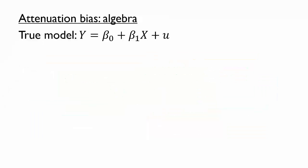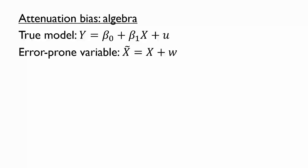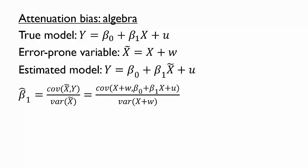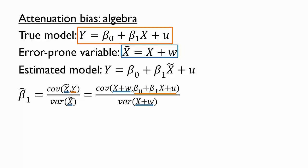Let's put some algebra behind the patterns we're seeing. Let's start with the model we'd like to estimate, and also the definition of the error-prone independent variable x tilde. We'll assume for now that we have an accurate measure of y, so we're stuck estimating a model with the error-prone x. Recall the formula for the OLS slope estimator, which divides the covariance of the independent and dependent variable by the variance of the independent variable. We can replace x tilde using its definition with x plus w, and similarly we can replace y using the true model with beta 0 plus beta 1 x plus u.